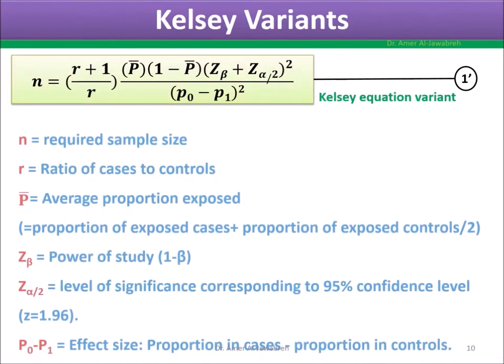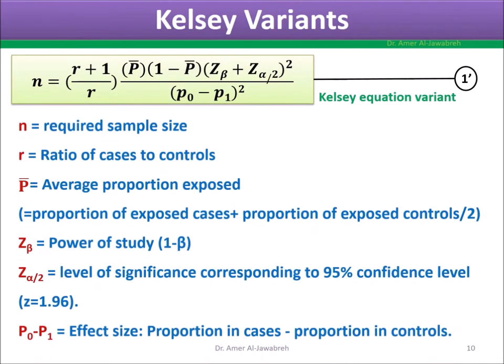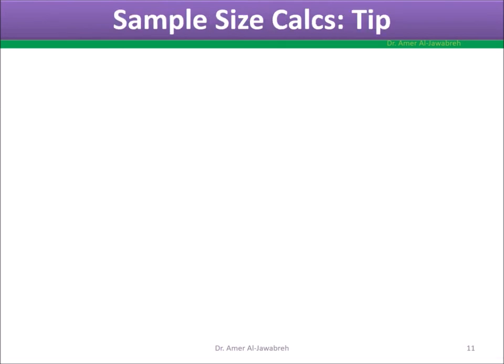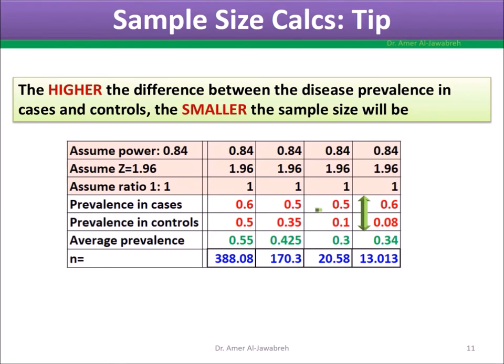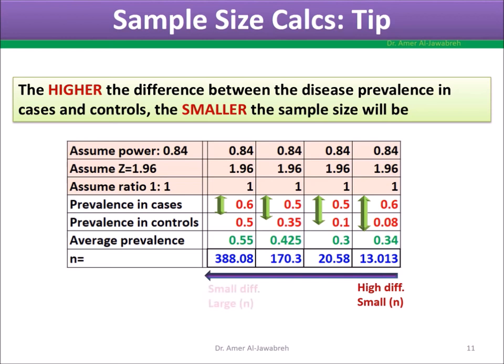There is also the Kelsey equation variant. Tip: The higher the difference between the disease prevalence in cases and controls, the smaller the sample size will be.